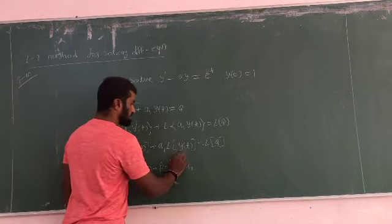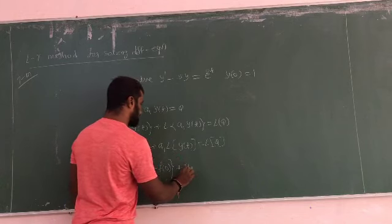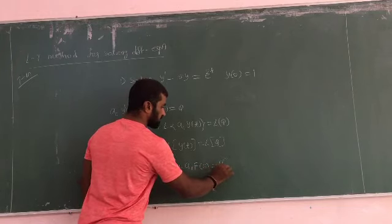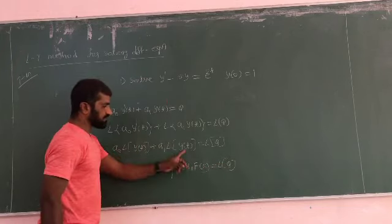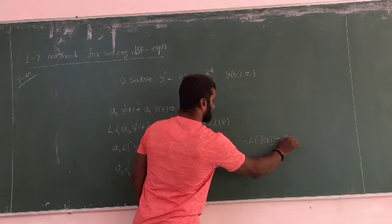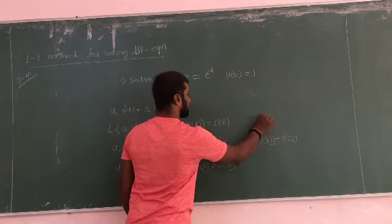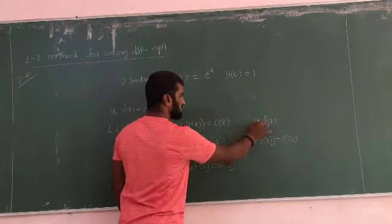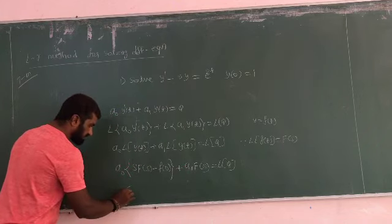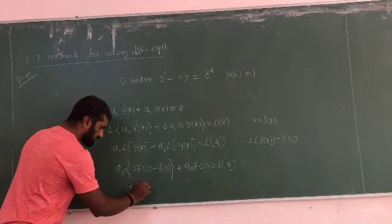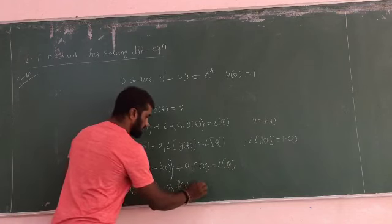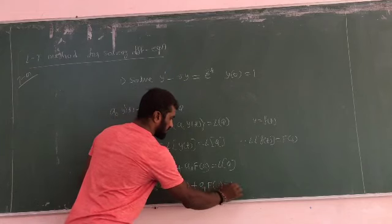Substituting, we get A-naught times [s·F(s) minus f(0)] plus A1 times the Laplace of y(t). Since y equals f(t), the Laplace of y(t) is F(s). So A1 times F(s) minus A1·f(0), plus A1·F(s), equals L{Q}.